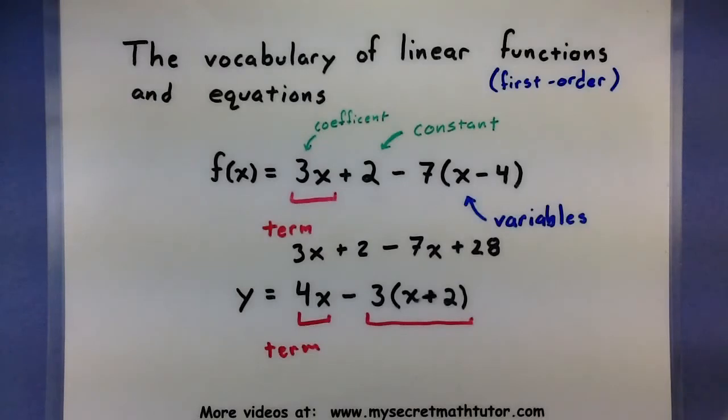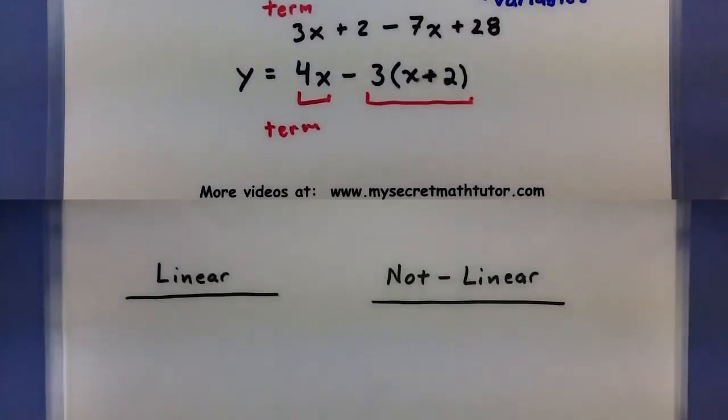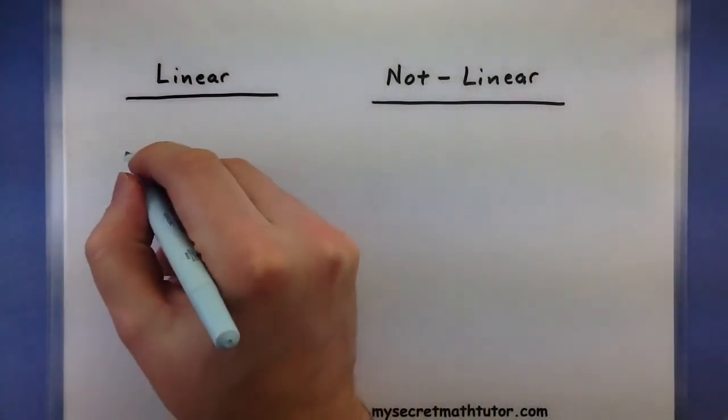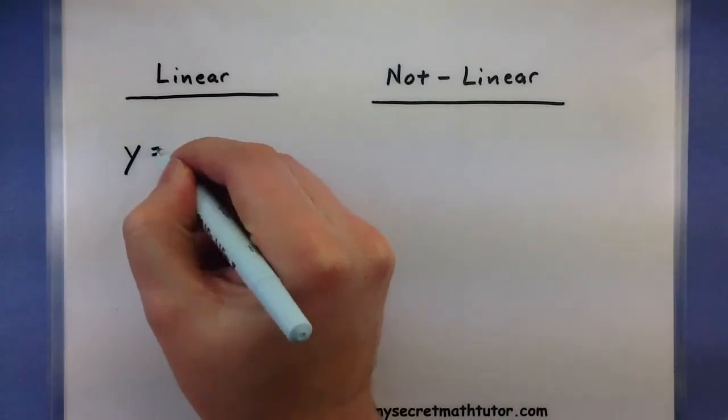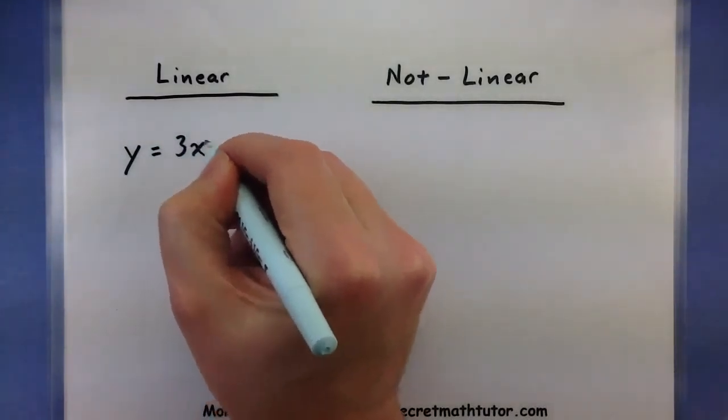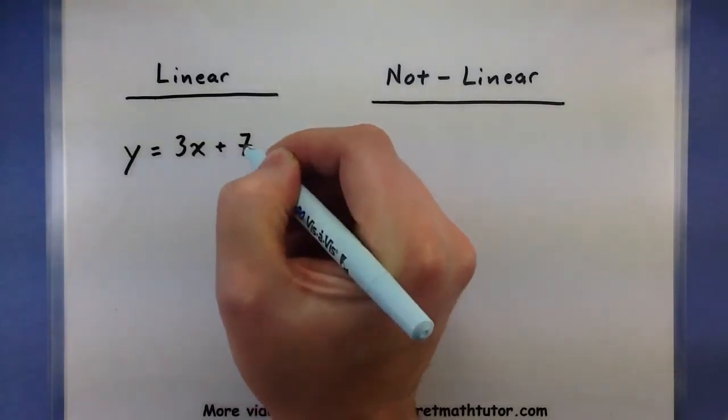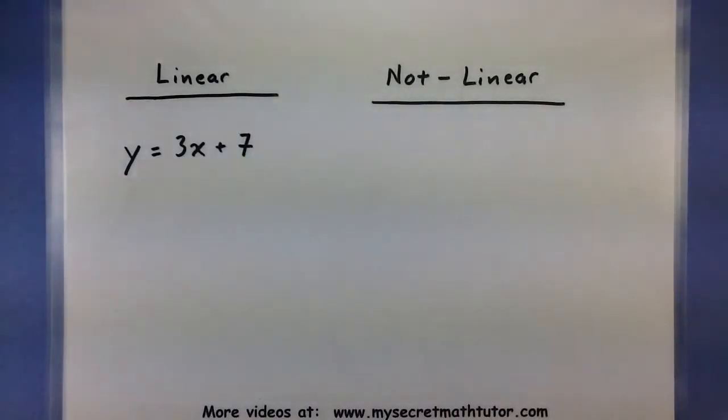Let's quickly go through a few examples of trying to recognize linear functions and linear equations. This will help you identify them a little bit better. Here's a good example of a linear equation. We can see that the variables in there are raised to the power of 1 at the most.